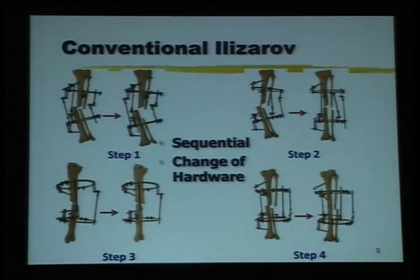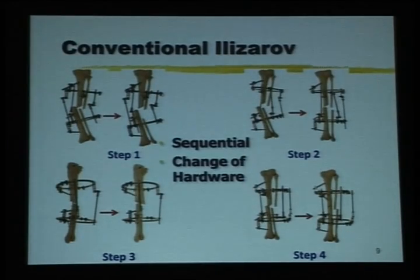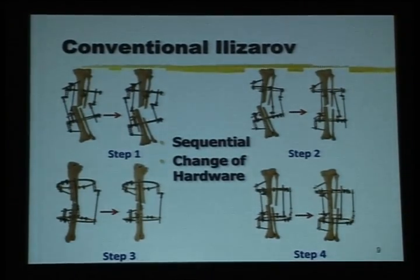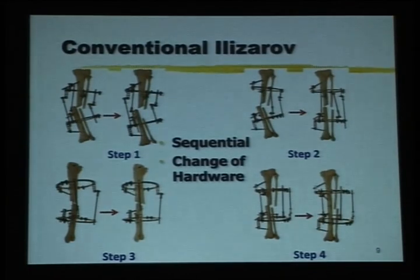When you do a regular Ilizarov lengthening, one end of the bone is going to its desired position in one direction. With sequential correction, first you pull it apart, then you change the angle, then you change the angle again. This is not very good for the regenerate, apart from the fact that it is a big headache to change the hardware.